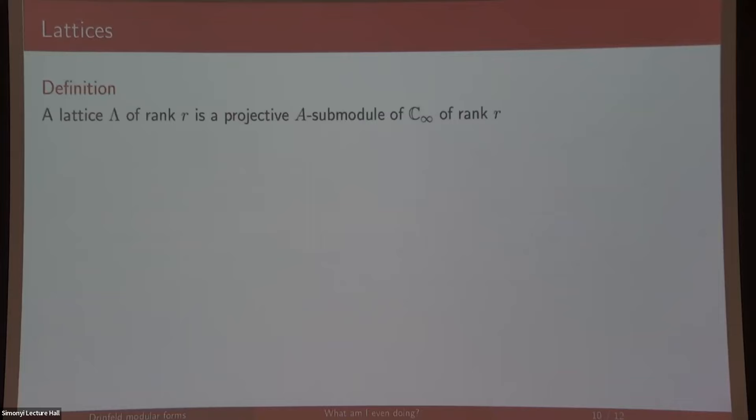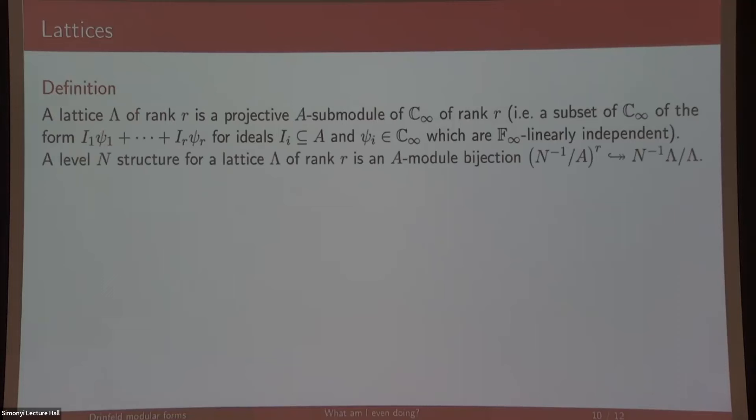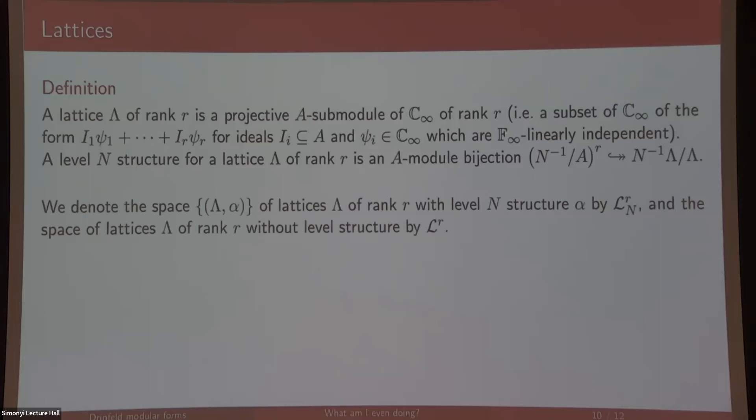How do we define them as functions of lattices? First, a lattice is a projective A sub-module of the analog of the complex numbers. It looks like that, where those are ideals because they're not necessarily principal, and those are F_infinity independent complex numbers. You can define a level structure in the same way as a bijection between the n-torsion points, and we denote the space of lattices with level n structure as L_n^r, and space of lattices of rank r as L^r.